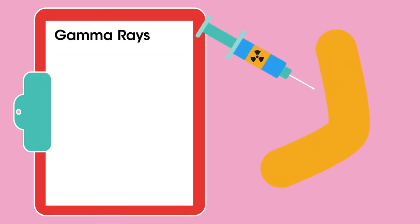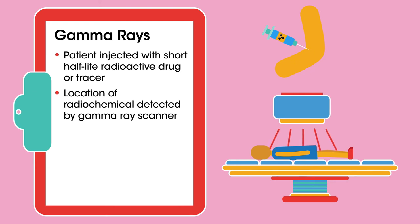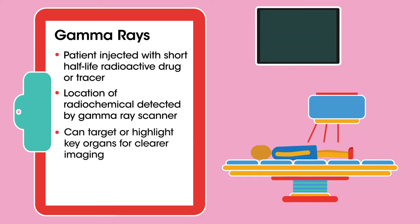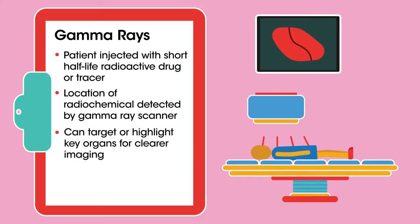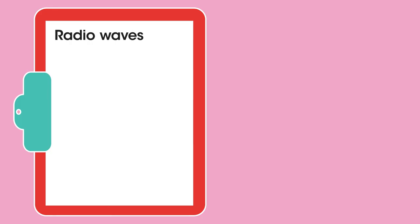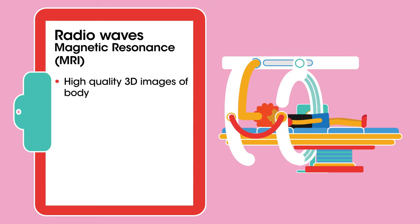Gamma rays — this technique uses short half-life radionuclides which are injected into the body. Their location or distribution is then detected by the emitted gamma rays and mapped by external equipment. This can build up a 3D image of internal organs. There is some risk to all concerned in this case.